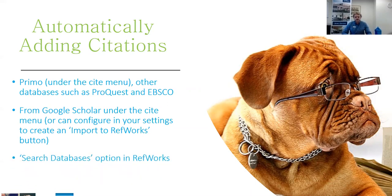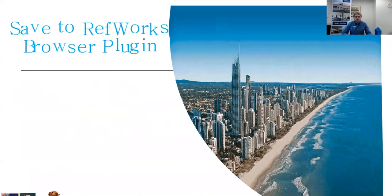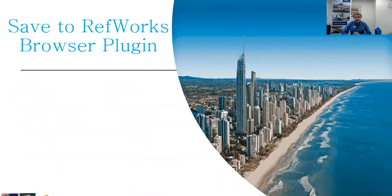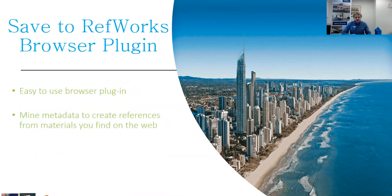There's also a search databases option in RefWorks — I find it a little bit hit and miss, but it can be quite useful. There's also the save to RefWorks browser plugin, which I'll show you how to add to your browser. When you're on a particular page or site, you just hit the button and it tries to get metadata to create a reference. Sometimes it gives you a perfect reference; sometimes it gives you nothing and you have to manually add it, but it can be a good way to quickly get references in.